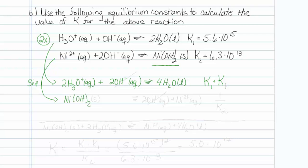There's my nickel hydroxide solid, and it is in equilibrium with two hydroxide aqueous and a nickel two plus, also aqueous. When you flip a reaction, you take one over the equilibrium constant. So the equilibrium constant for the second reaction would be one over K2.